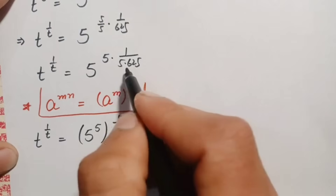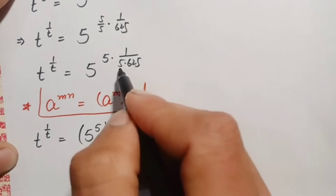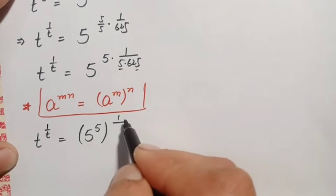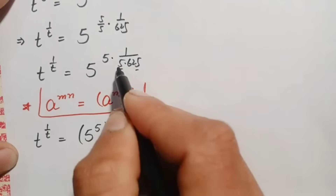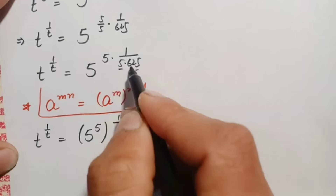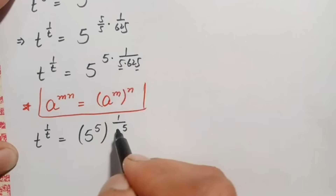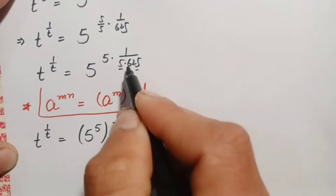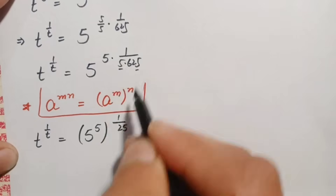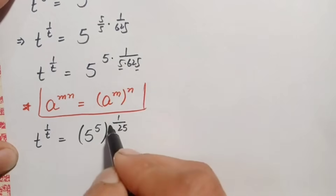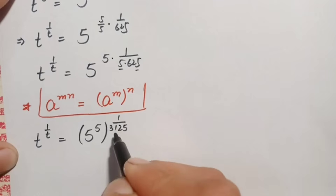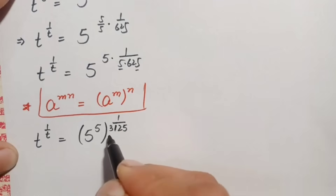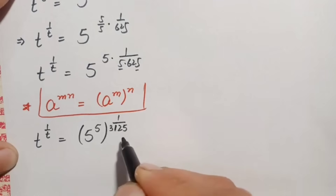Now let's multiply 5 times 625 to simplify the denominator. So 5 times 5 is 25, 25 times 5 is 125, 125 times 5 is 625, and 625 times 5 is 3,125. So 5 times 625 equals 3,125. Therefore the exponent 1 over the product 5 times 625 becomes 1 by 3,125.